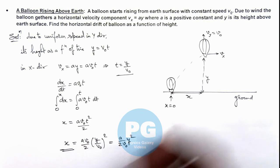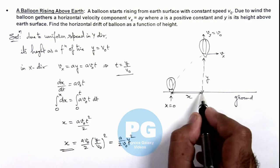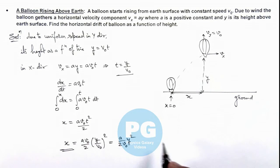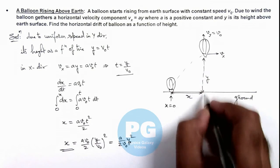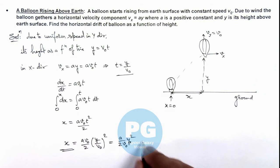So this is the horizontal drift gathered by the balloon due to the horizontal component of velocity which is given as a function of y, the height of ascent of balloon. So this is the final result of this problem.